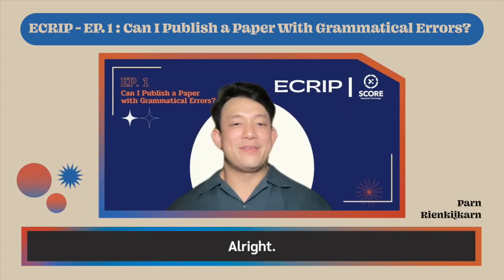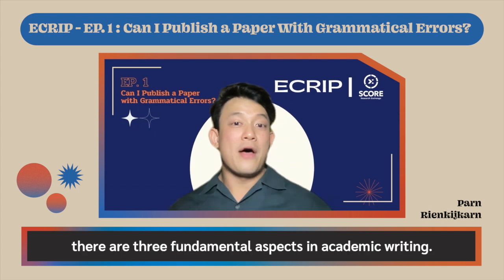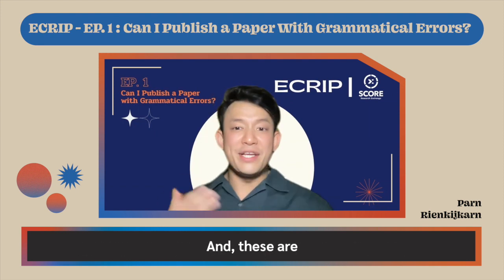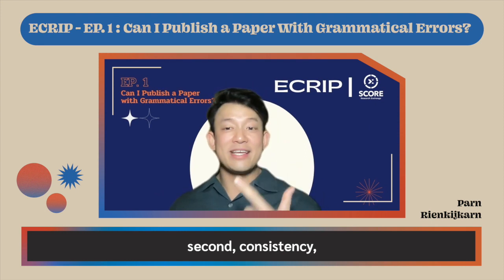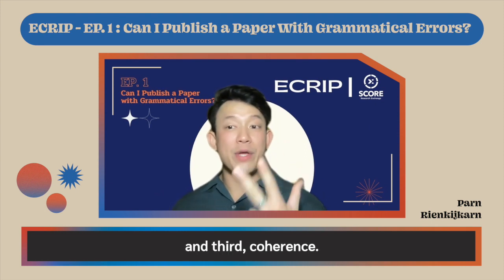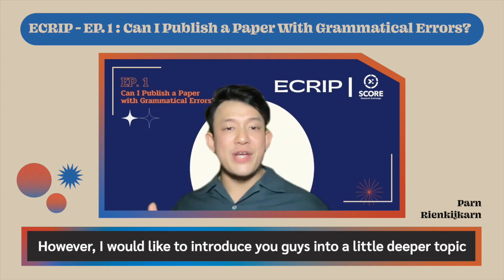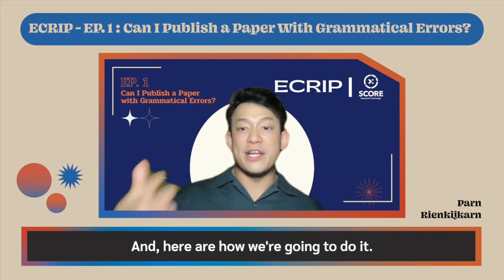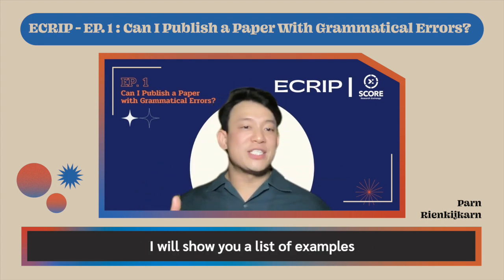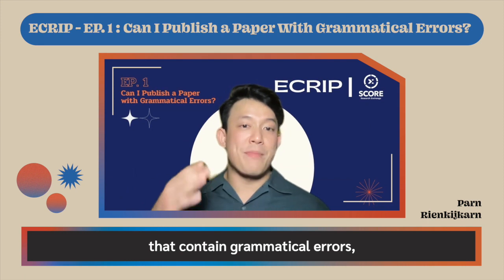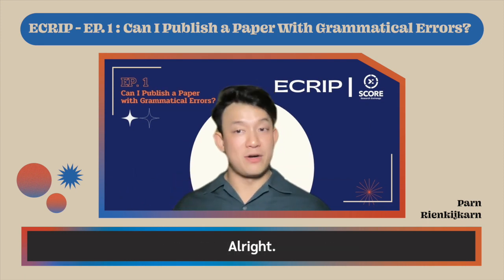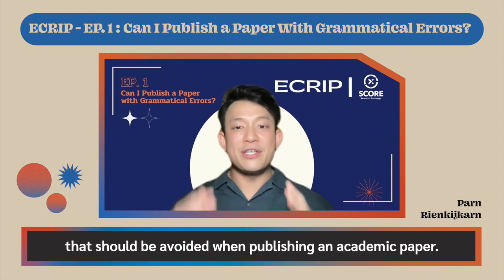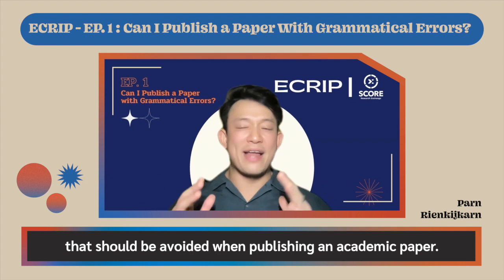Now, as most of you may know, there are three fundamental aspects in academic writing: first, thorough content; second, consistency; and third, coherence. However, I would like to introduce you to a deeper topic — grammatical mistakes. I will show you a list of examples that contain grammatical errors and how we can avoid them. Let's take a deep dive into the common grammatical errors that should be avoided when publishing an academic paper.